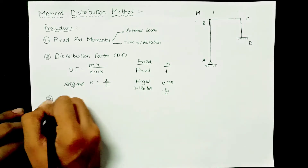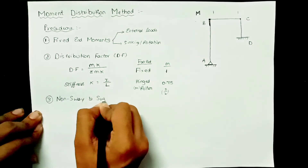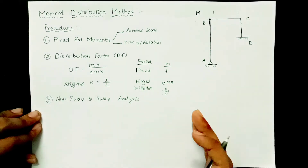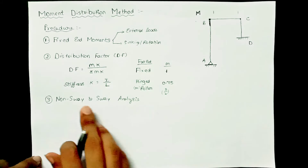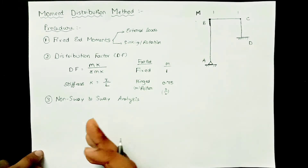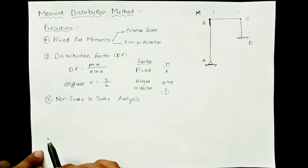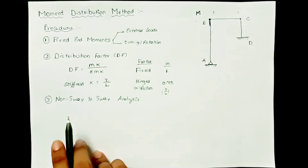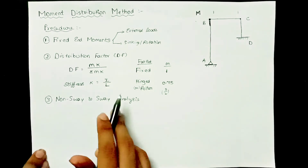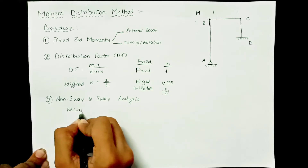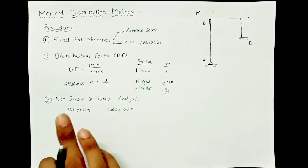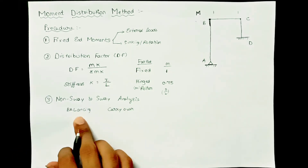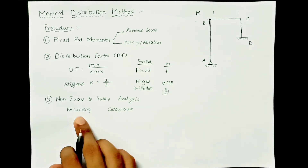The third step is non-sway and sway analysis. If the given frame is a non-sway frame, you can neglect the sway analysis. If it is a sway frame, you must analyze in both non-sway and sway conditions, drawing the table twice to calculate final moments. This step involves two types of calculations: balancing and carry-over. Balancing is the algebraic sum of moments, with the sign changed and multiplied by respective distribution factors.